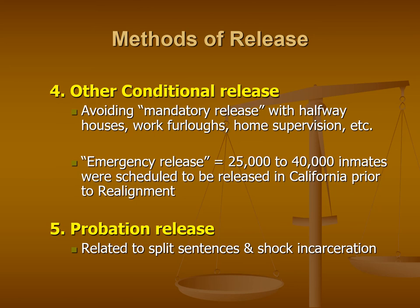There's also something known as emergency release, which falls under the other conditional release category. Especially with rising inmate numbers and prison overcrowding, prisons need to figure out how to trim their population. California faced this several times over the last 20 years. Prior to realignment, California was ordered to trim their excess state inmates by 25,000 to 40,000, and different plans and protocols were put in place to release inmates in batches — raising further questions about who should be released, what criteria should guide those decisions, and what the potential impacts on society would be.